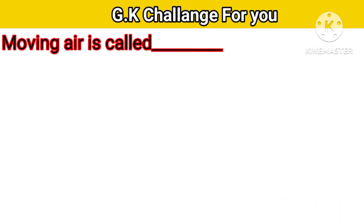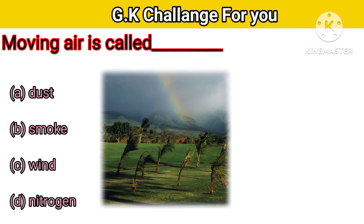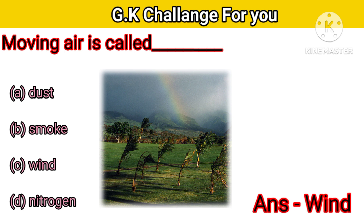Next question: Moving air is called — Option A: Dust, B: Smoke, C: Wind, D: Nitrogen. Your right answer is wind.